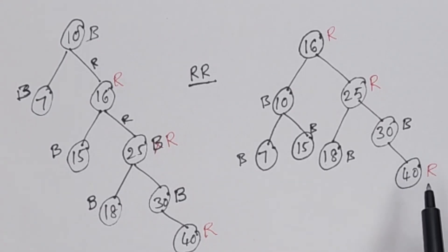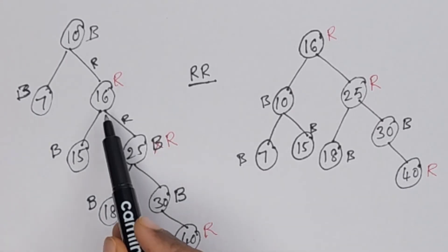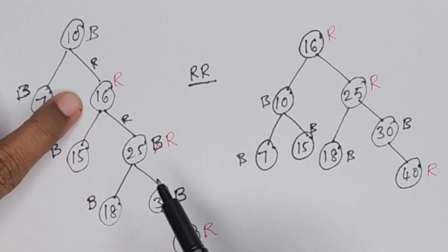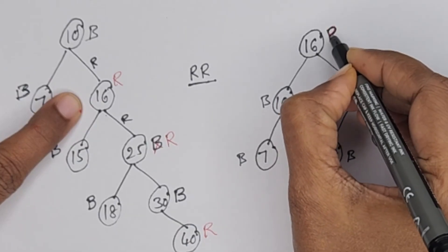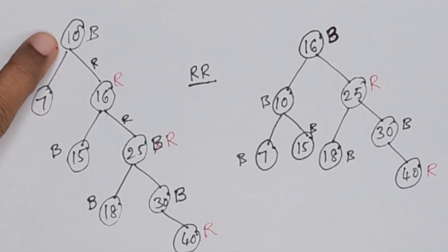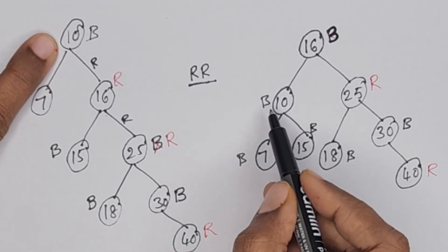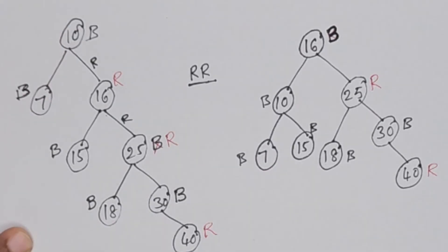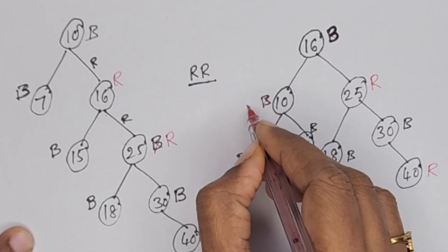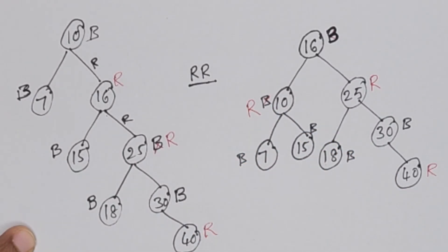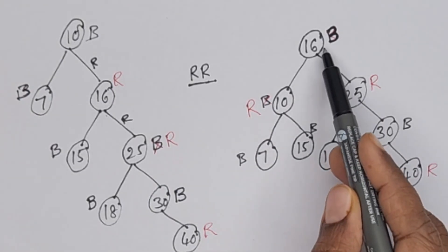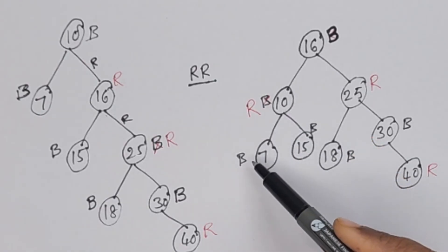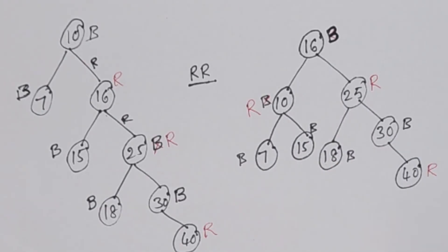After rotation, recolor parent and grandparent. Parent of 25 is 16: 16 is red — make it black. Grandparent is 10: 10 is black — make it red. Check: no red-red conflict. When traversing from every node to a leaf, the number of blacks is 2, 2, 2, and 2. The red-black tree is complete.